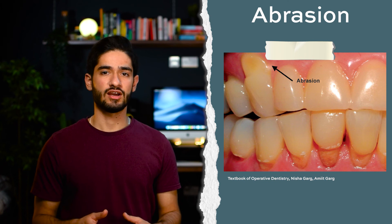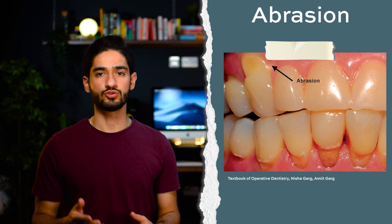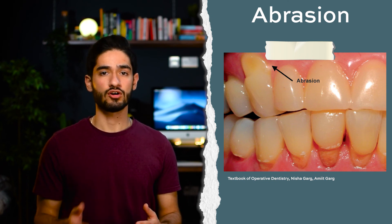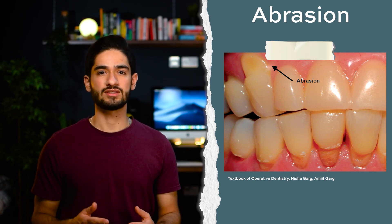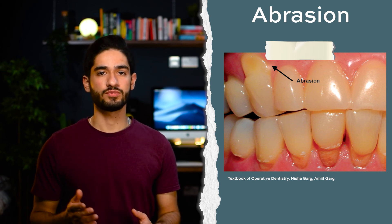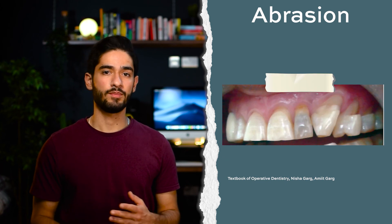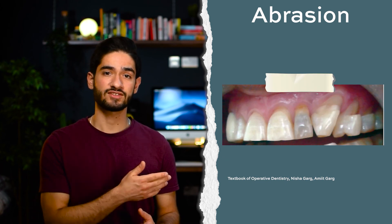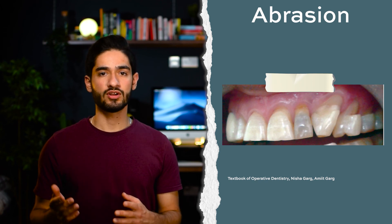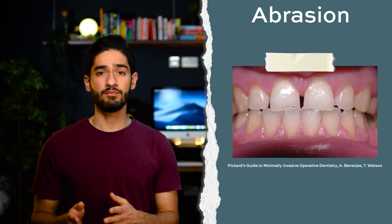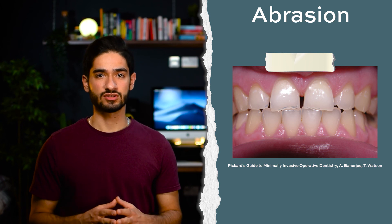The next type of tooth surface loss is abrasion, and it's tooth wear caused by tooth-to-non-tooth contact. For example, hard tooth brushing with charcoal activated toothpaste, or habits like pen biting. Depending on the habit the patient will present differently — if a patient is right-handed and constantly over-brushing the left side of their mouth, you would see tooth wear on the buccal cervical margins of the upper left teeth, whereas with pen biting you will see chipped incisal edges.